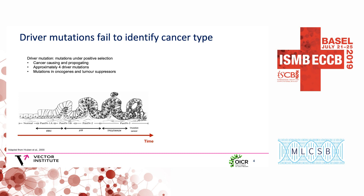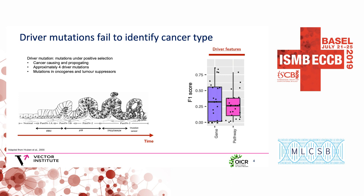In addition, mutations carry ancestral information, providing information about both the metastasis and the primary tumor. Based on this, my colleague Wei Zhao at the Ontario Institute for Cancer Research trained a random forest classifier to identify cancer type based on mutations to driver genes and driver pathways. What we found was that across 24 cancer types, driver genes and driver pathways were typically unable to accurately identify cancer type, suggesting that driver mutations are not a good feature for discriminating between different cancer types.